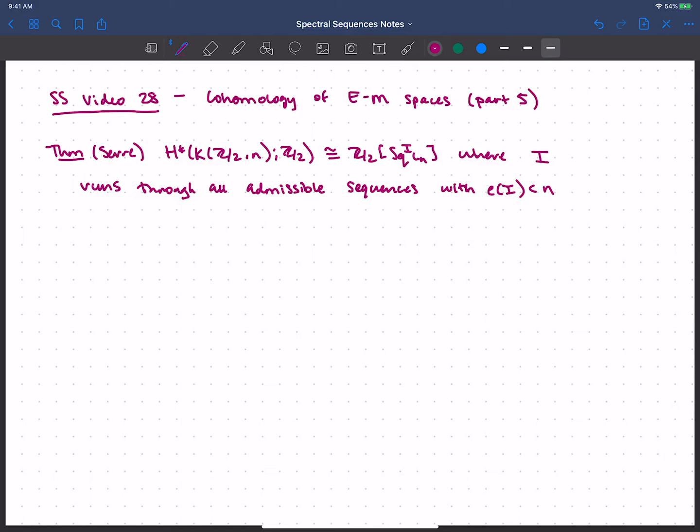Notice, by the way, the lowest degree thing here, iota n, has degree n. So we're only going to start to see that polynomial stuff come into play when we get to iota n squared. That'll be our first product. And so indeed, this does just look like the squares, some of the squares at least, the ones that have excess less than n, on iota n up to degree 2n. And then it's at degree 2n where things start to get funky and we see these products.